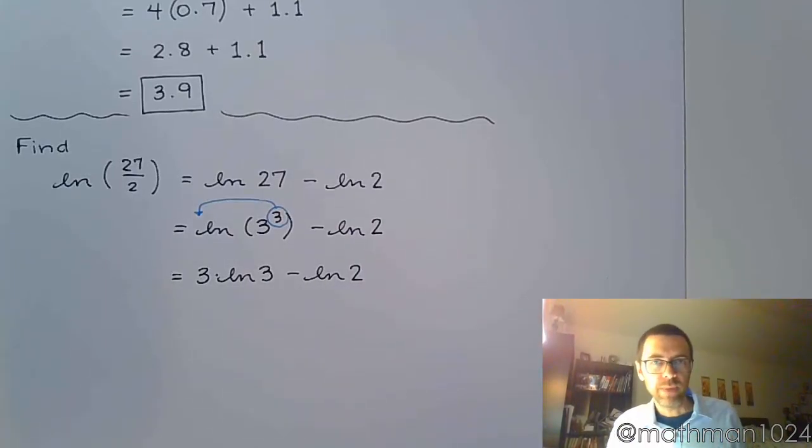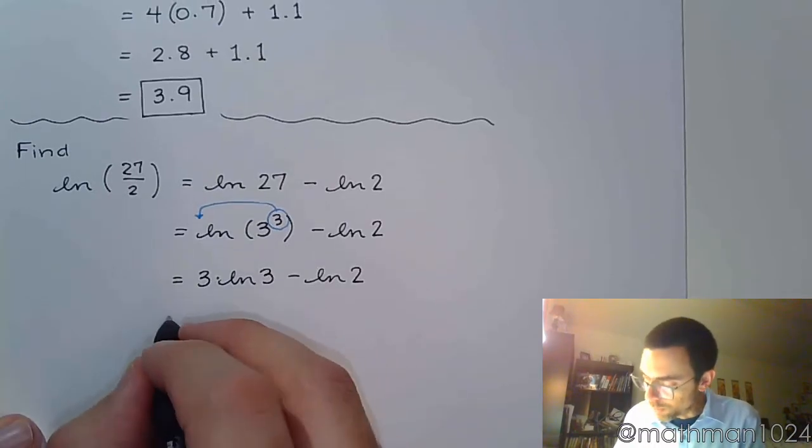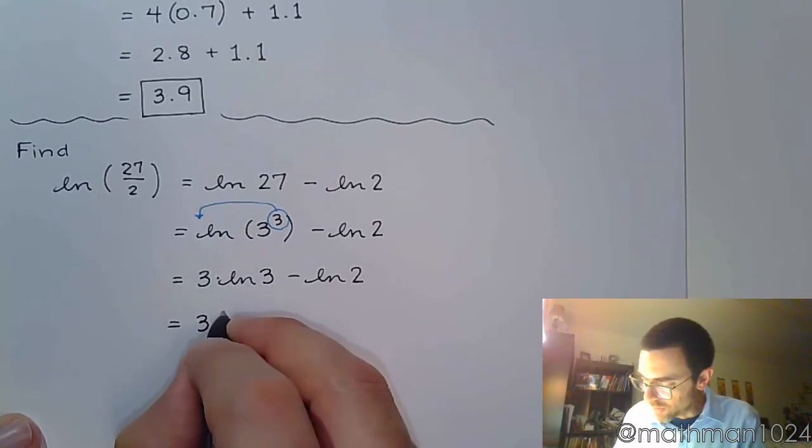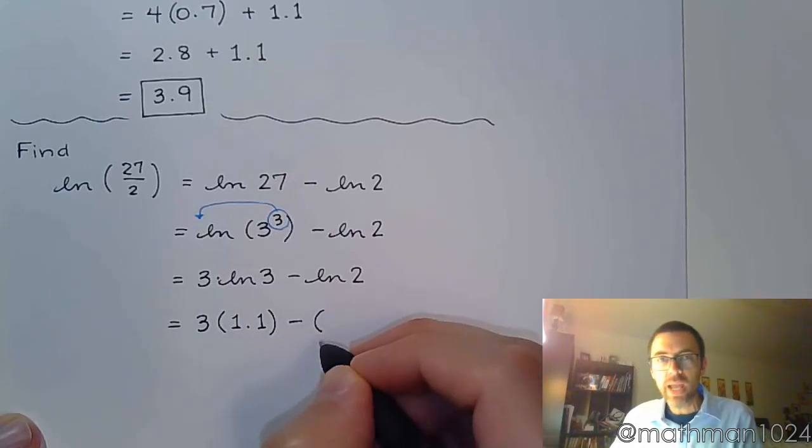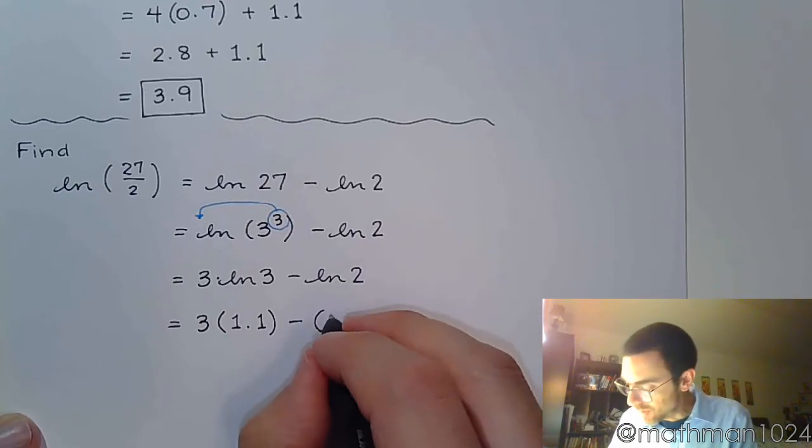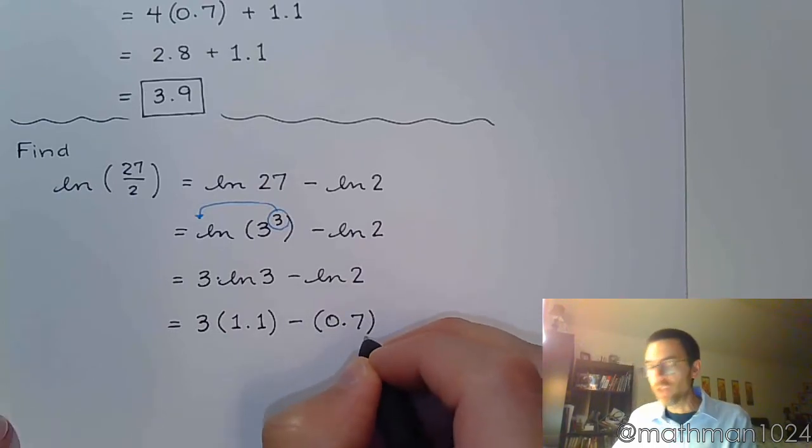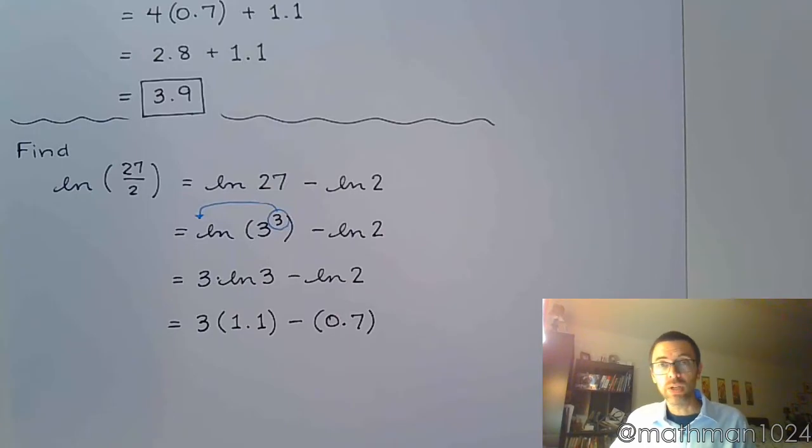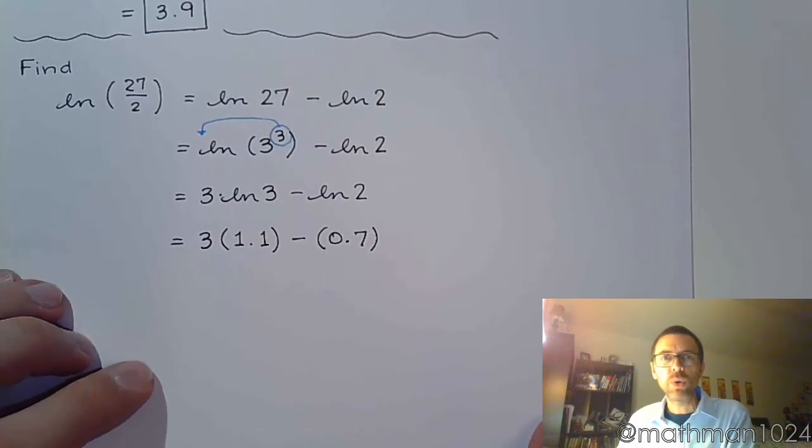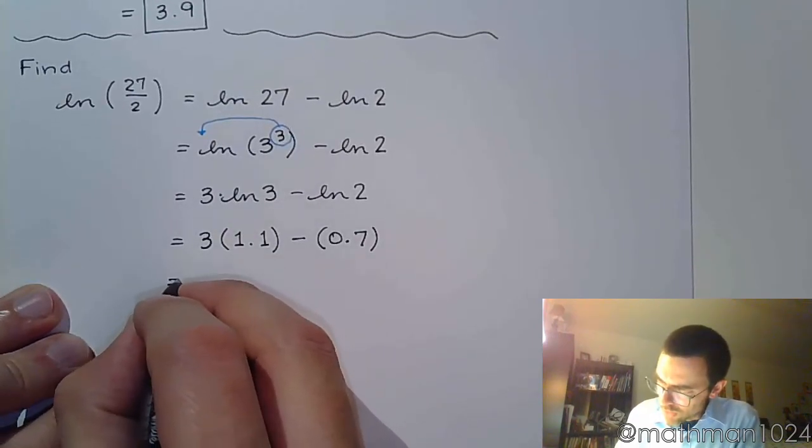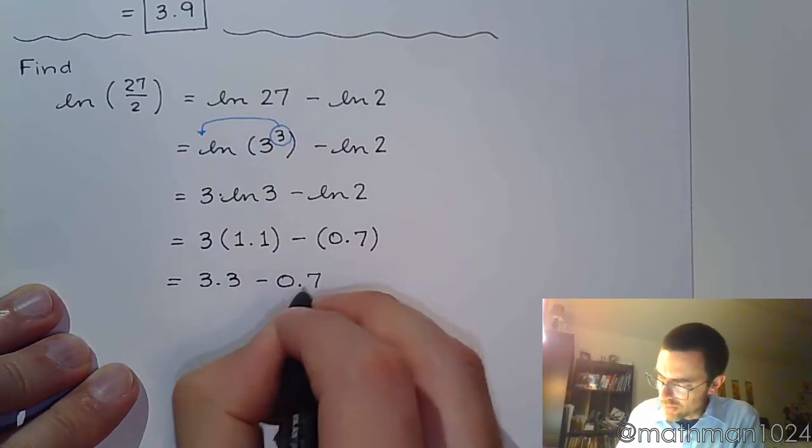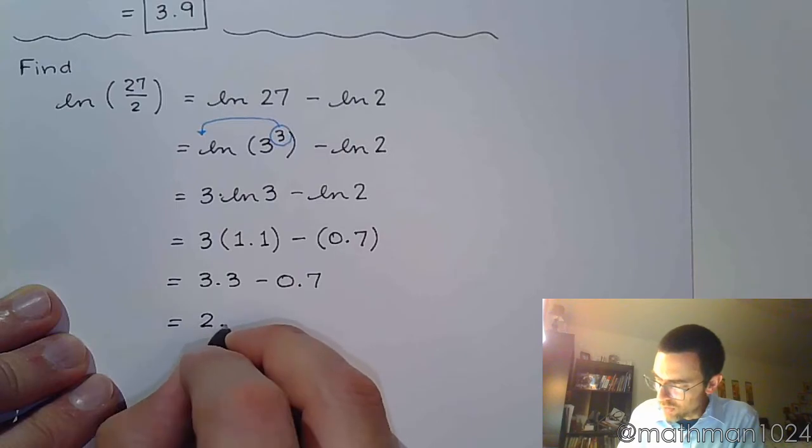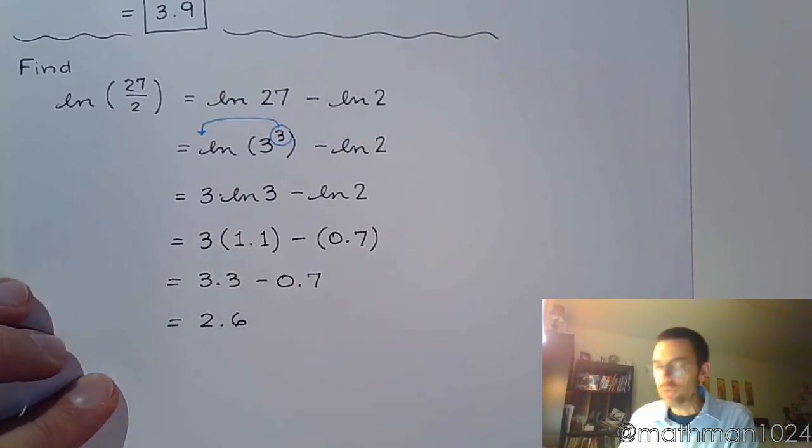And then we go back to that given information. We were told to use 1.1 for the natural log of 3. So this is 3 times 1.1 minus, and we were told to use 0.7 for the evaluation of natural log of 2. And once we're at this step, this is just simple, do you know how to work with your decimals, right? So this is 3.3 minus 0.7, and so we come up with a value of 2.6.